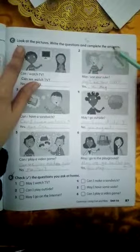This is a very important exercise. Let's read grammar here. We want to answer the grammar may and can in the case of the question. This is number one. Let's start with the second one. It's 87 exercise C. Look at the pictures. Write the questions and complete the answers.